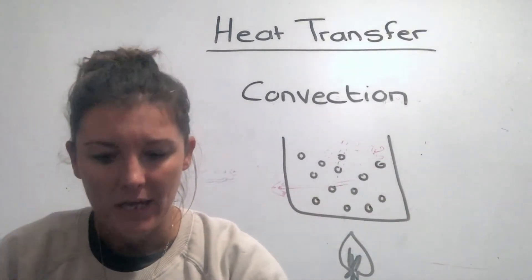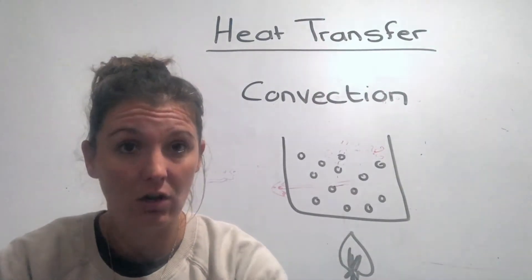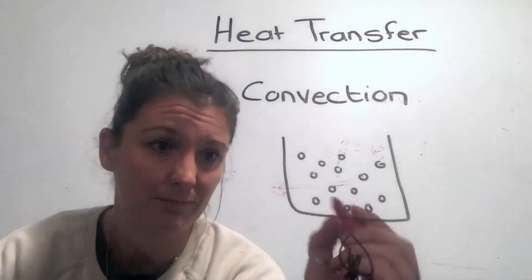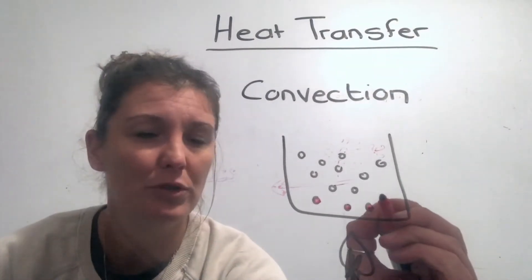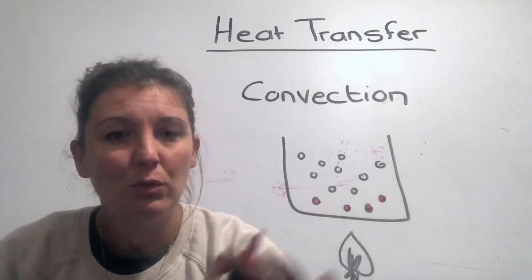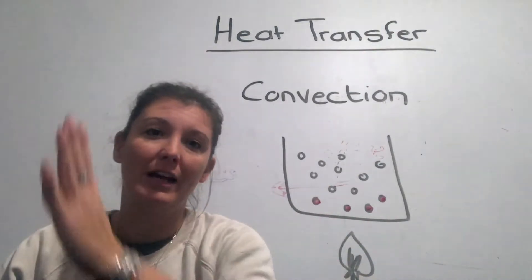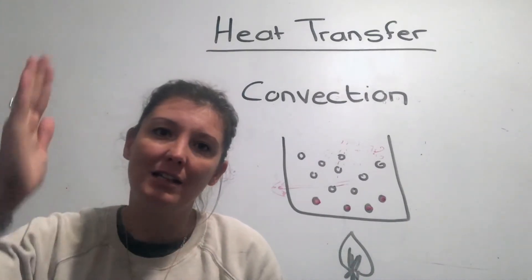Now what's going to happen is the bottom particles will get hot, and because they get hot they move faster. But because there's more room to move, they don't necessarily have to bump into each other. They are moving up, so they become less dense, they become lighter and less dense.